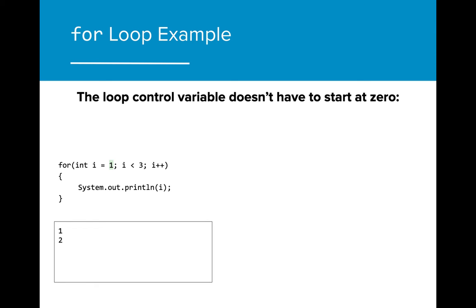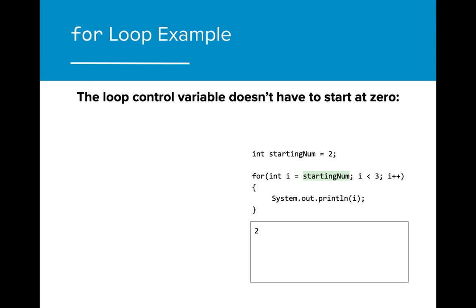It's important to note that the loop control variable doesn't have to start at zero. We can manipulate the value of the loop control variable to be any number, or even assign it the value of another variable. In this example, the variable i is assigned to the value one. When the program runs, the first output will be the number one instead of zero. We can also set the value of the initialization variable to another variable value. Here, we can set the initialization variable to startingNum. When the program runs, only the value two is output, as that is the starting value.